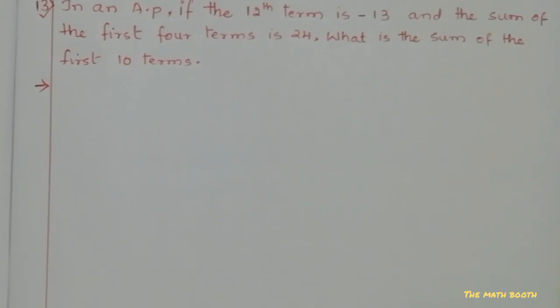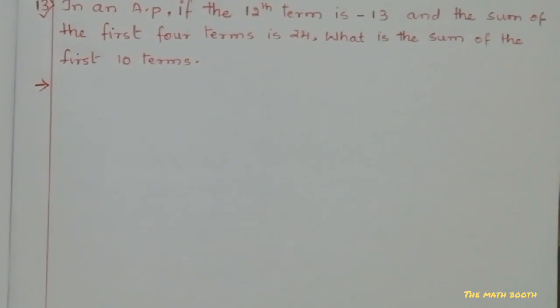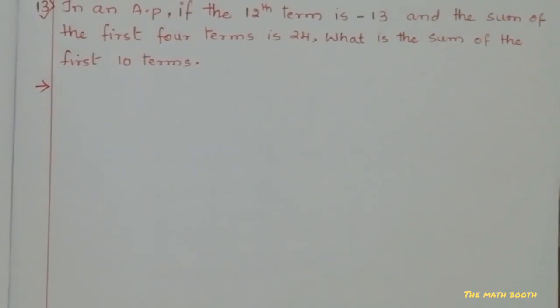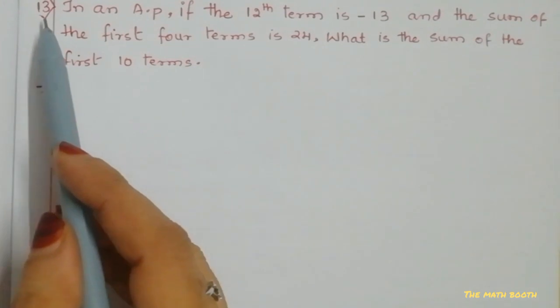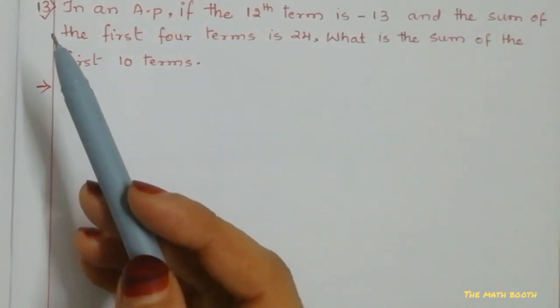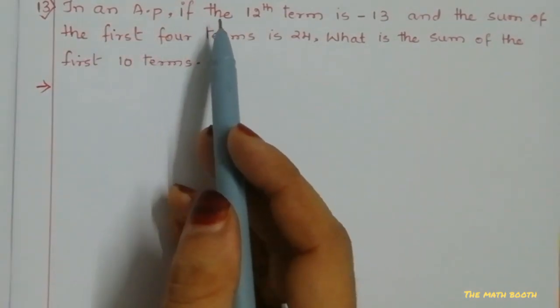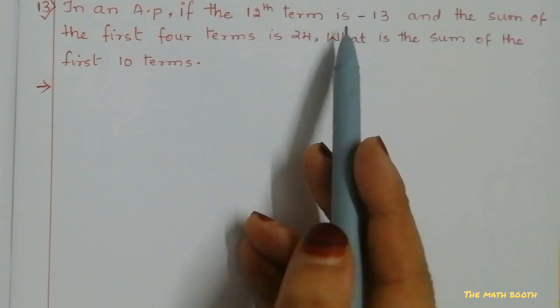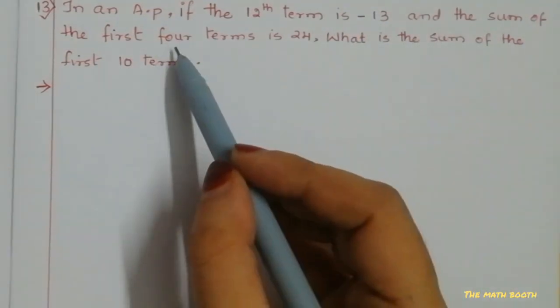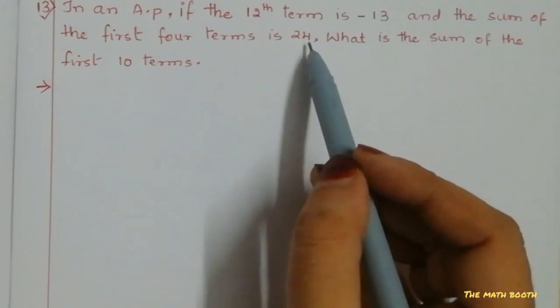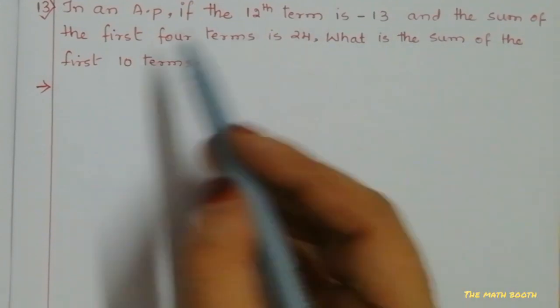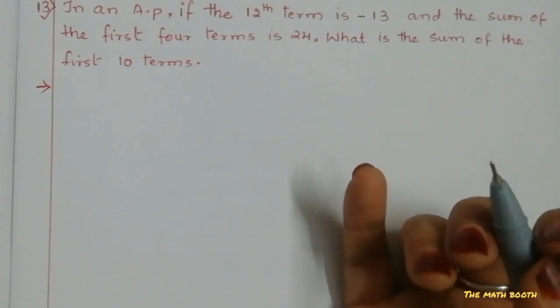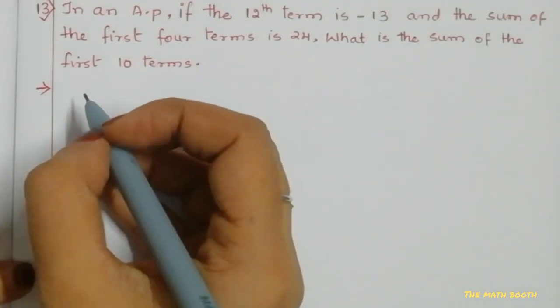Assalamualaikum, hello everyone, welcome back to my channel. Today I am here with the next important question on AP from previous year question papers. So let us see the question here. Question number 13: In an AP, if the 12th term is -13 and the sum of first 4 terms is 24, what is the sum of first 10 terms?